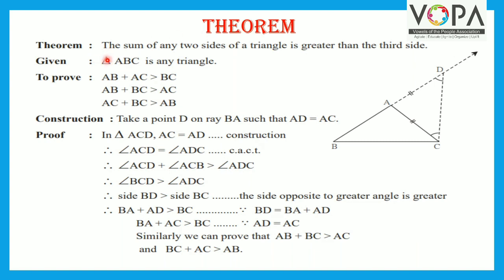Let's learn to prove the theorem: The sum of any two sides of a triangle is greater than the third side. Given: triangle ABC is any triangle. We have to prove: AB plus AC is greater than BC, AB plus BC is greater than AC, and AC plus BC is greater than AB. Construction: Take a point D on ray BA such that AD is equal to AC, shown with a similar sign.